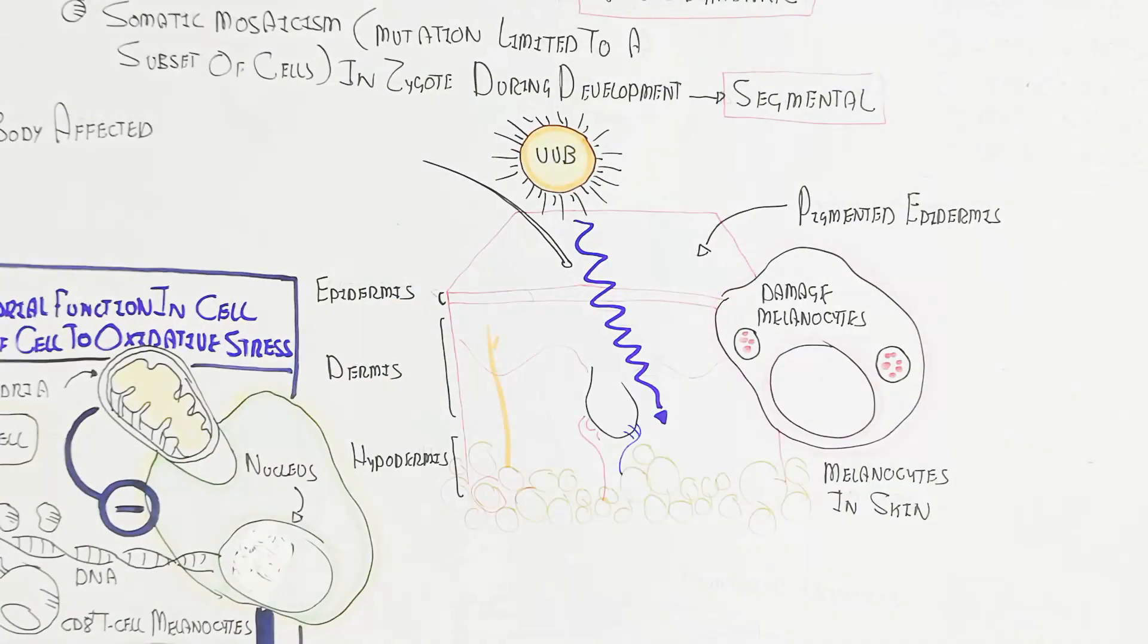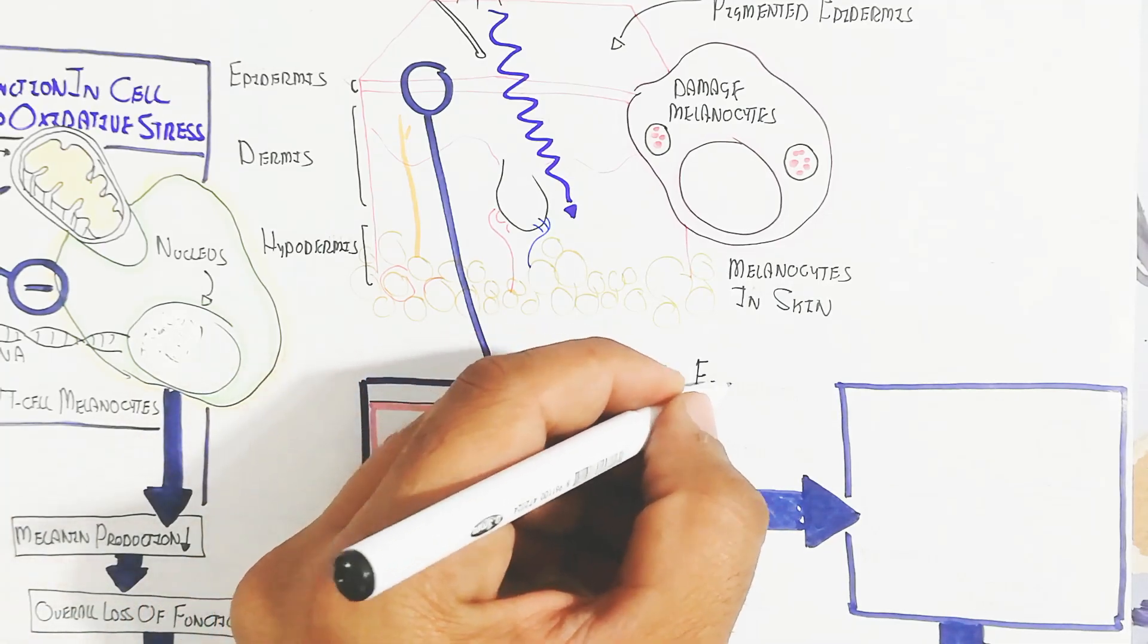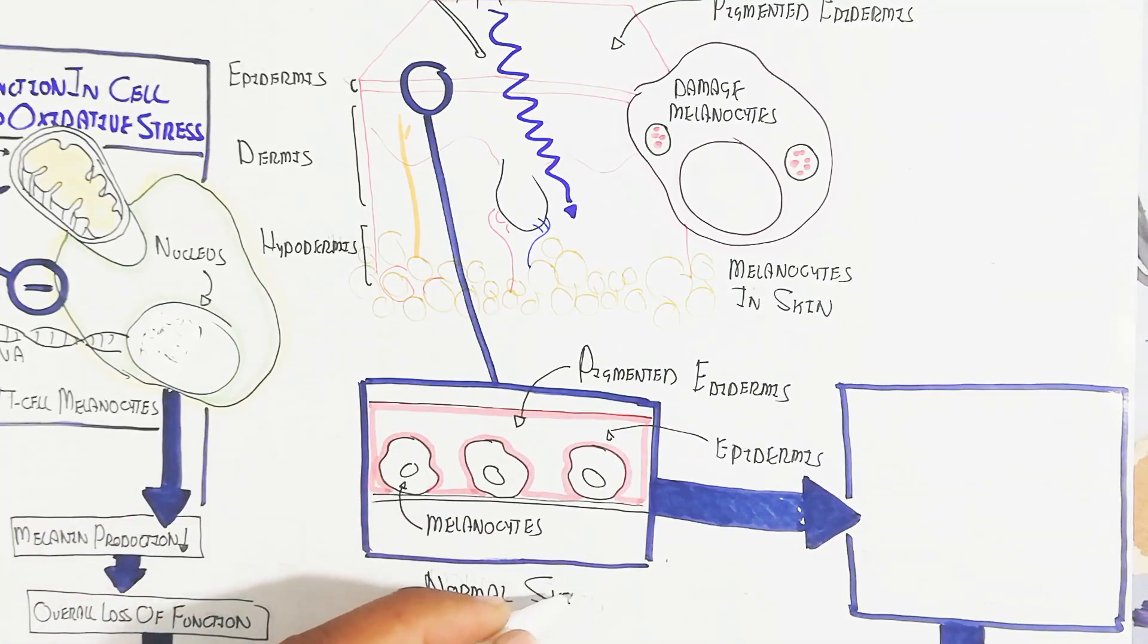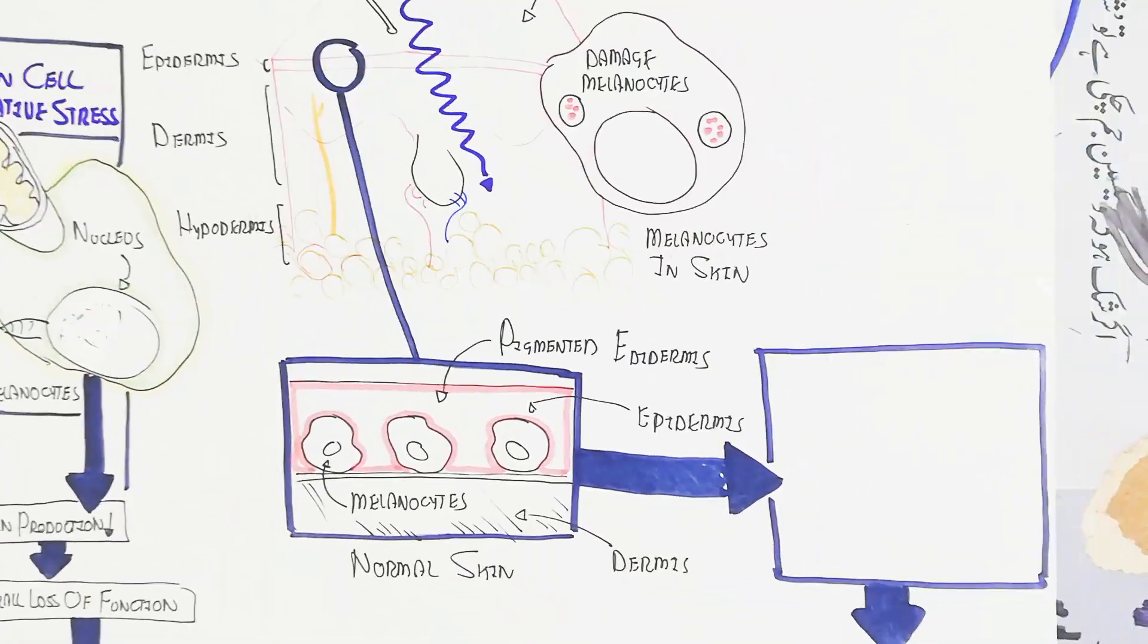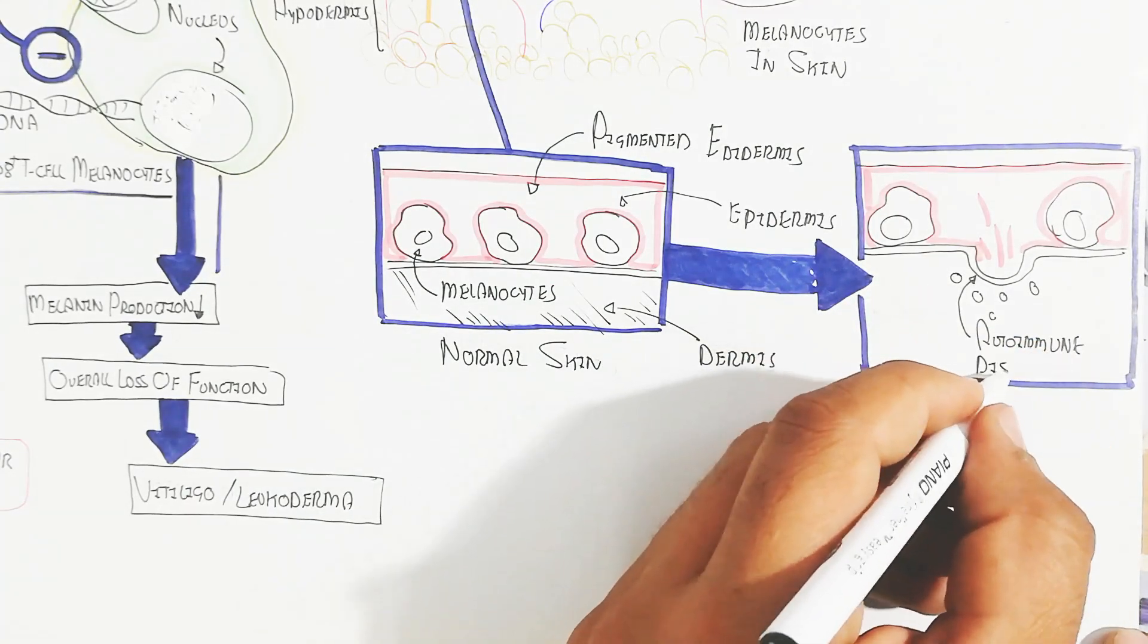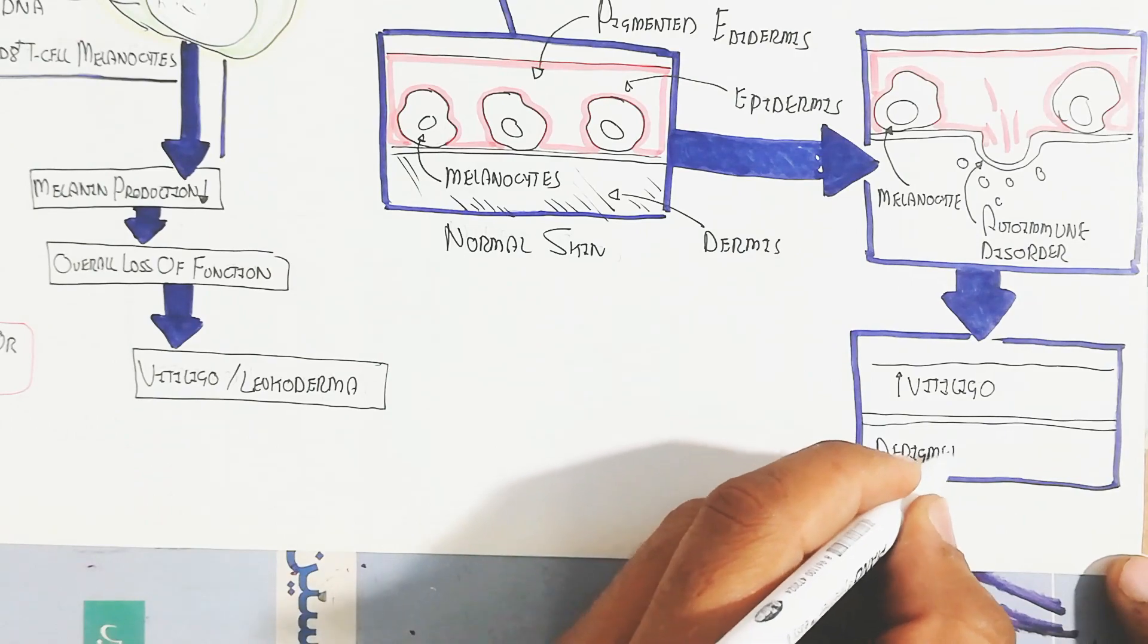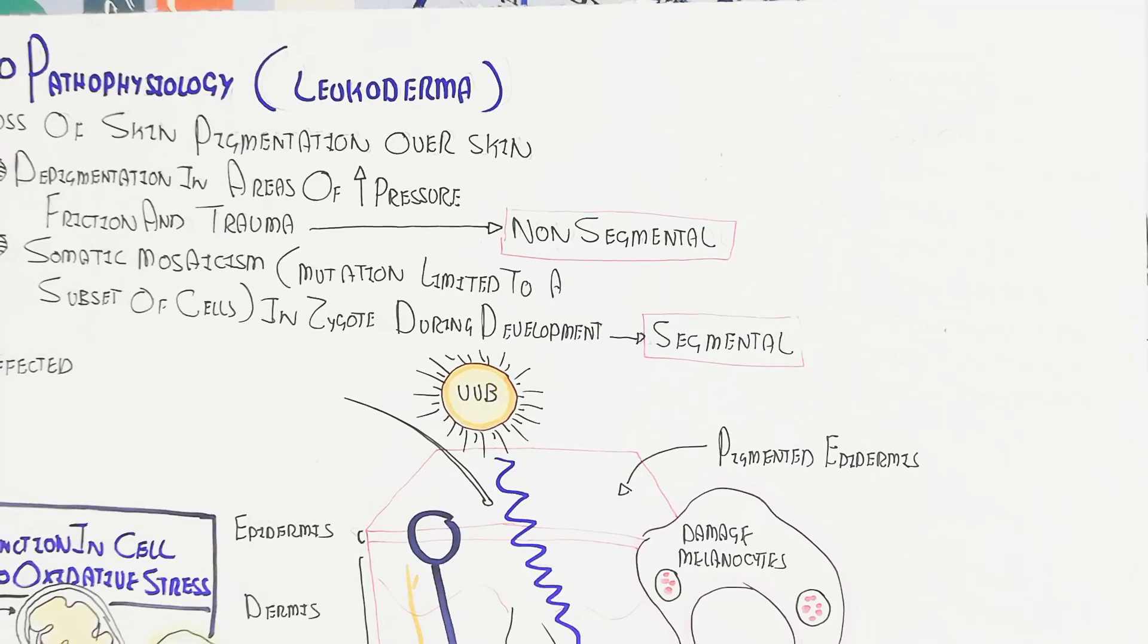The normal skin has pigmented epidermis with melanocytes in the dermis. The autoimmune disorder occurs through this activity, and vitiligo develops as the epidermis clears and depigmentation of skin occurs.